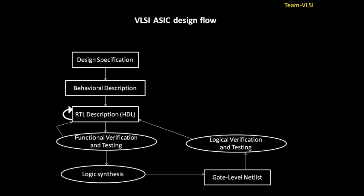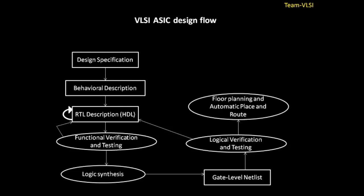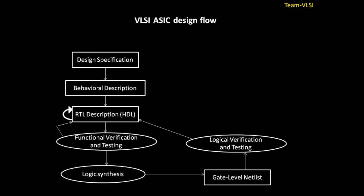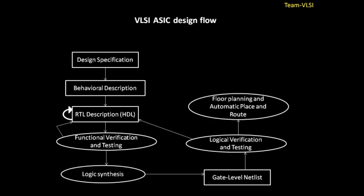Once logical verification is completed, the next step is floor planning and automatic placement and routing. From this stage we start working on the backend. Basically there are two types of teams: the work from design specification until logical verification is called front-end, and from floor planning and automatic placement and routing until our GDS2 is called back-end.